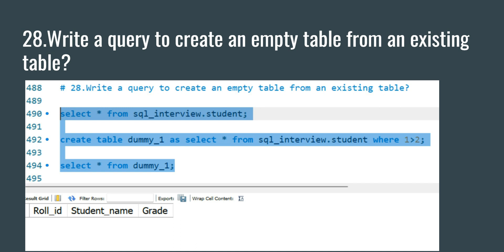It is quite easy. As you can see, I have written SELECT * FROM an existing table. If I need to create another empty table with the same structure, I can use the syntax: CREATE TABLE dummy AS SELECT * FROM this existing table WHERE 1 > 2. This condition '1 > 2' will always be false, so no records will be returned.